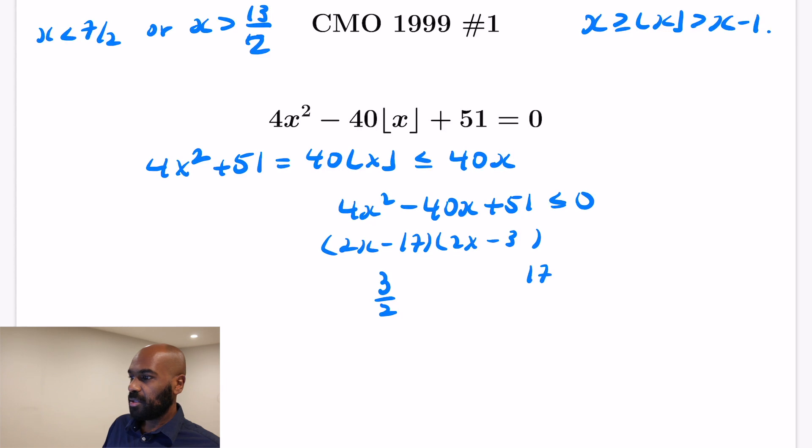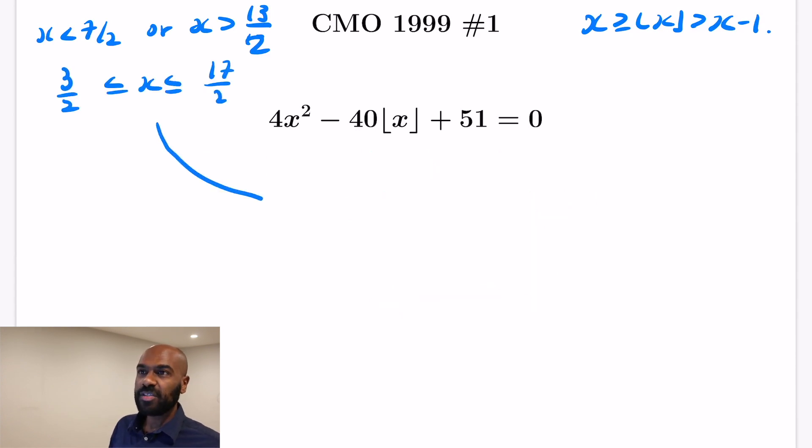So we'll get (2x - 17) as one of the factors, and then (2x - 3). We want that to be less than or equal to 0. Now here, the individual factors are 0 at 3/2 and 17/2, and we want this quantity to be less than or equal to 0, so x has to be between those two quantities. So our values of x satisfy these two different sets of inequalities. And if you merge them together, that actually tells you that 3/2 ≤ x < 7/2, or that 13/2 ≤ x ≤ 17/2.